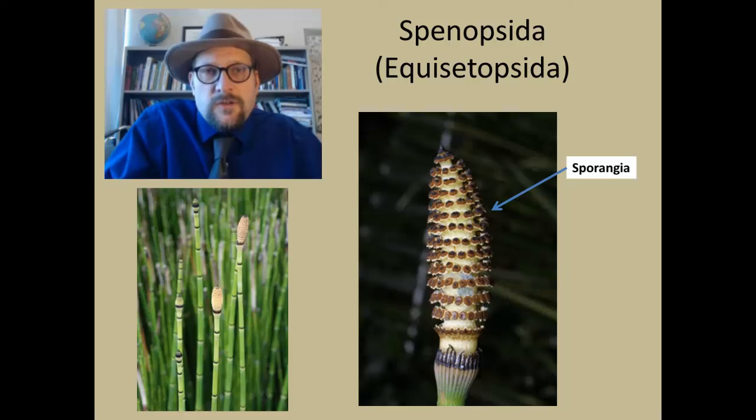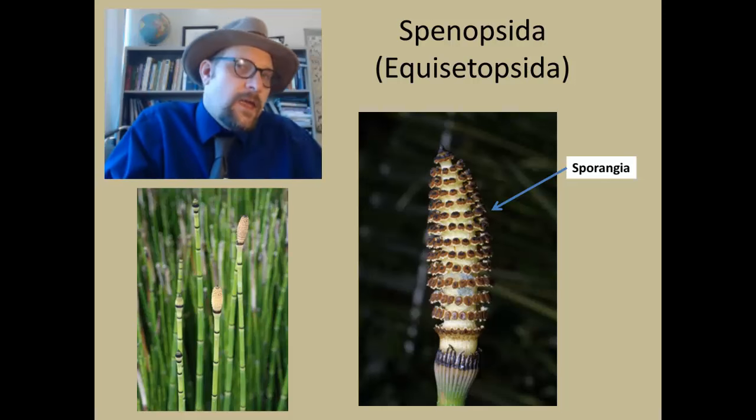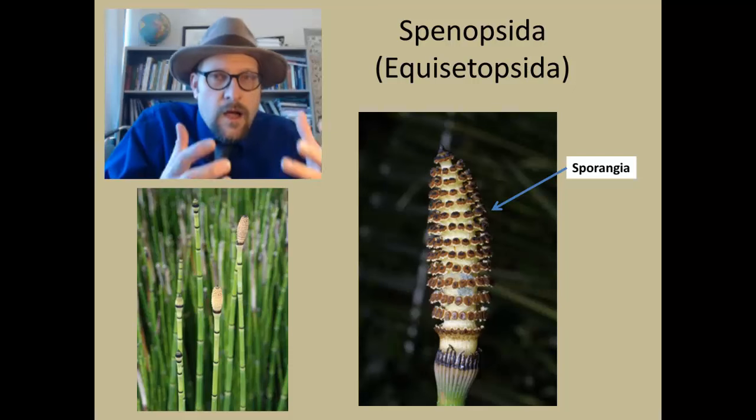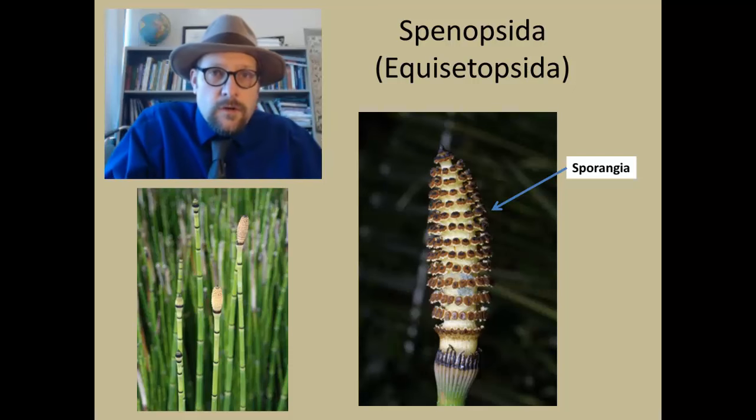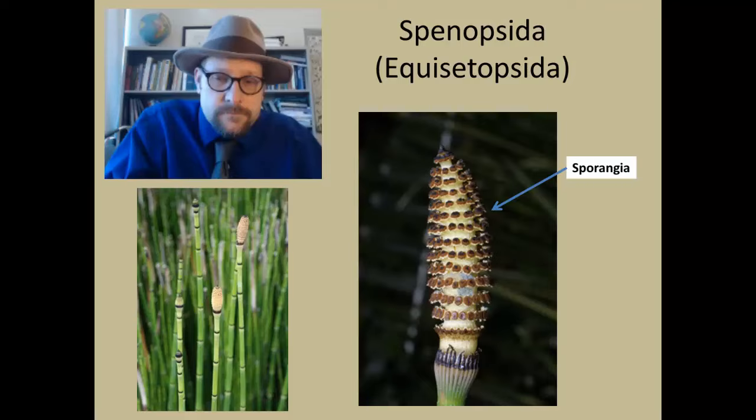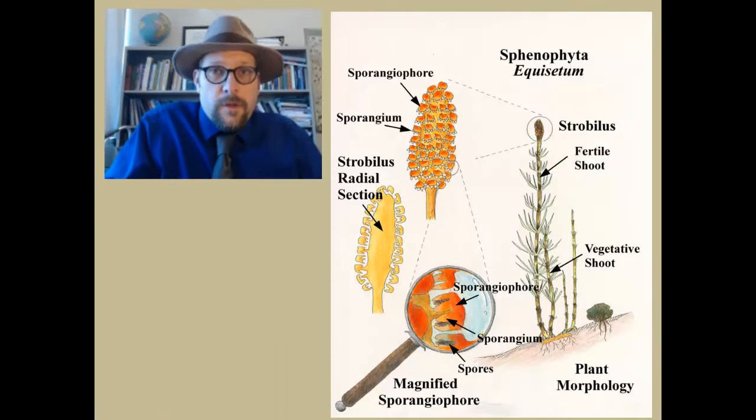This cone-like sporangia are believed to have evolved from a plant that exhibited spore-bearing sporangia along the tips of leaves which have been retracted into the axis of the plant and concentrated in a cluster at the tip. The spore-bearing cone part of the plant is called the strobilus, which contains many sporangiophores, each supporting a sporangium, the spore-bearing part of the plant.